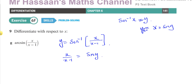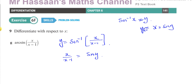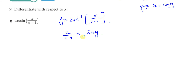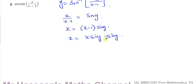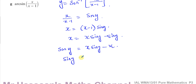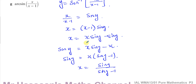I'm rewriting this to make x over x minus 1 the subject, and then I want to express x as a subject. Cross-multiplying gives x equals x sine y minus sine y. Bringing the x's to one side: sine y equals x times (sine y minus 1). So x equals sine y over (sine y minus 1).